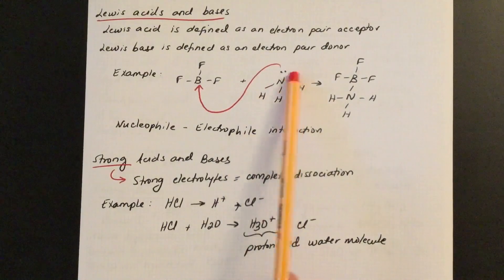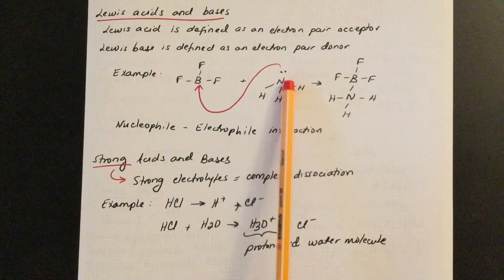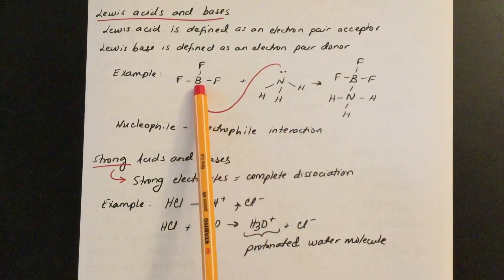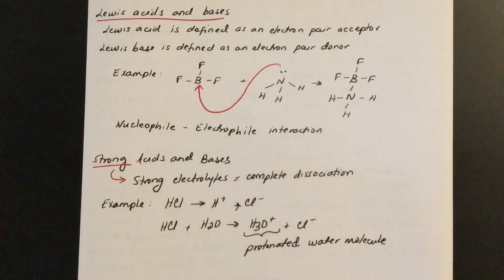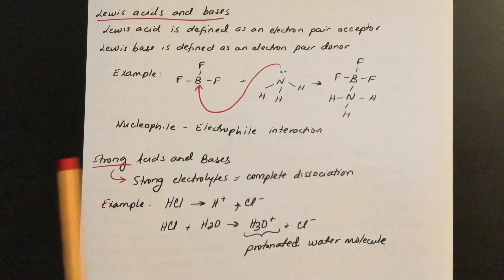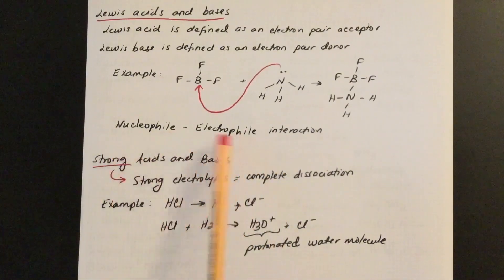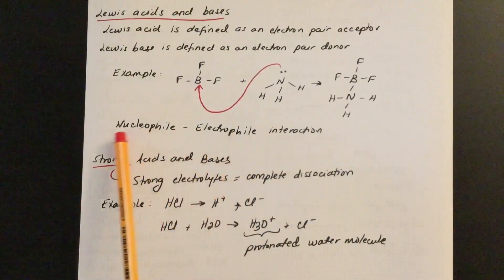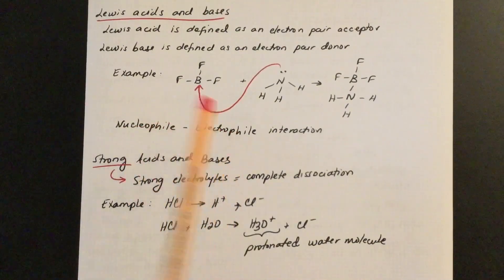For example, NH₃ (ammonia) has a lone pair of electrons on the nitrogen. That lone pair can form a chemical bond with B, which acts as the Lewis acid. This is a nucleophile-electrophile interaction. These terms — nucleophile and electrophile — are things you'll hear a lot in organic chemistry, and you should think about how those definitions relate to Lewis acids and Lewis bases.